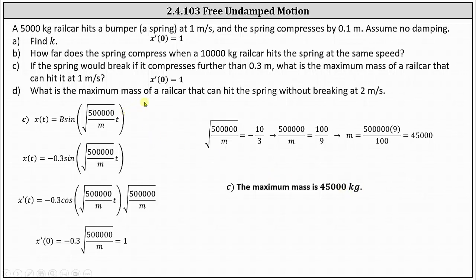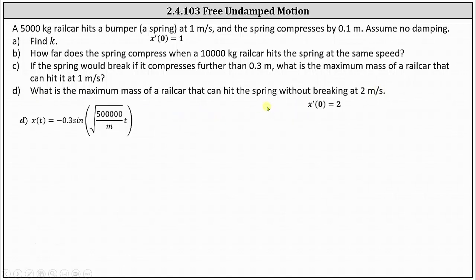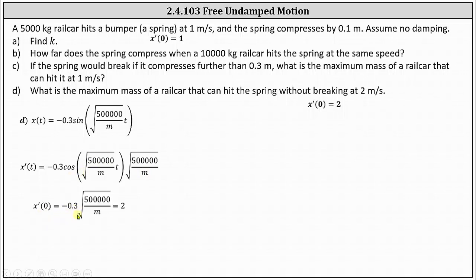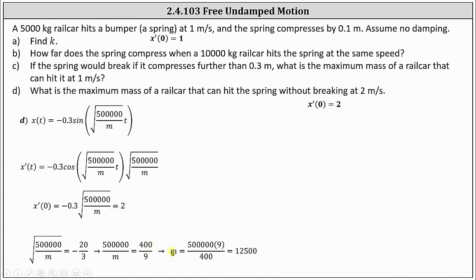For Part D: what is the maximum mass of a rail car that can hit the spring without breaking it at two meters per second? Now x'(0) = 2. With the same b = −0.3 and k = 500,000, using x'(0) = 2: −0.3·√(500,000/m) = 2. Multiplying both sides by −10/3, squaring, and simplifying: m = 500,000 × 9/400 = 12,500 kilograms. So the maximum mass is 12,500 kilograms when the initial velocity is two meters per second.